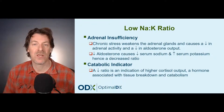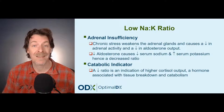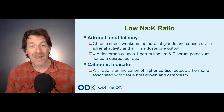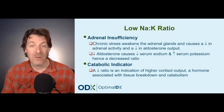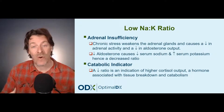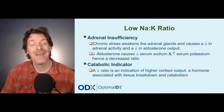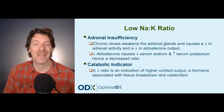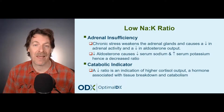Another indicator is what we call a catabolic indicator, because a decreased ratio is an indication of higher cortisol output — a hormone associated with tissue breakdown and catabolism. To summarize: an increased ratio is associated with acute stress and is potentially an inflammatory indicator, while a decreased ratio is associated with adrenal insufficiency and is also a catabolism indicator.